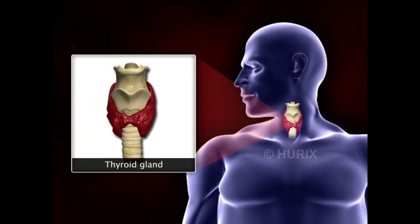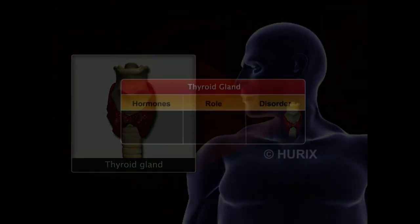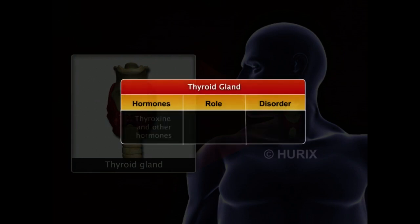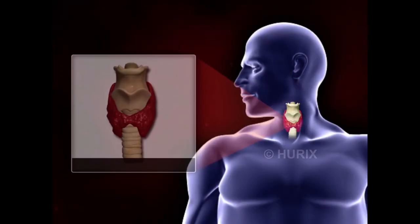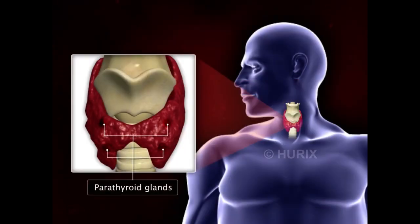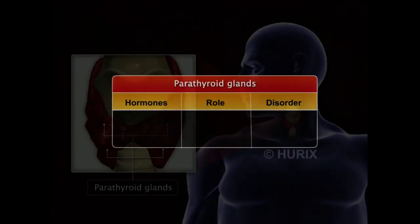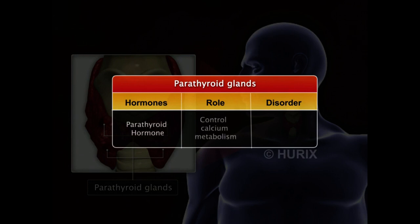The thyroid gland is situated below the voice box and secretes thyroxin and other hormones that control growth, metabolism, and calcium levels. Two pairs of parathyroid glands are located on the thyroid glands and secrete parathyroid hormone, which plays an important role in calcium metabolism.